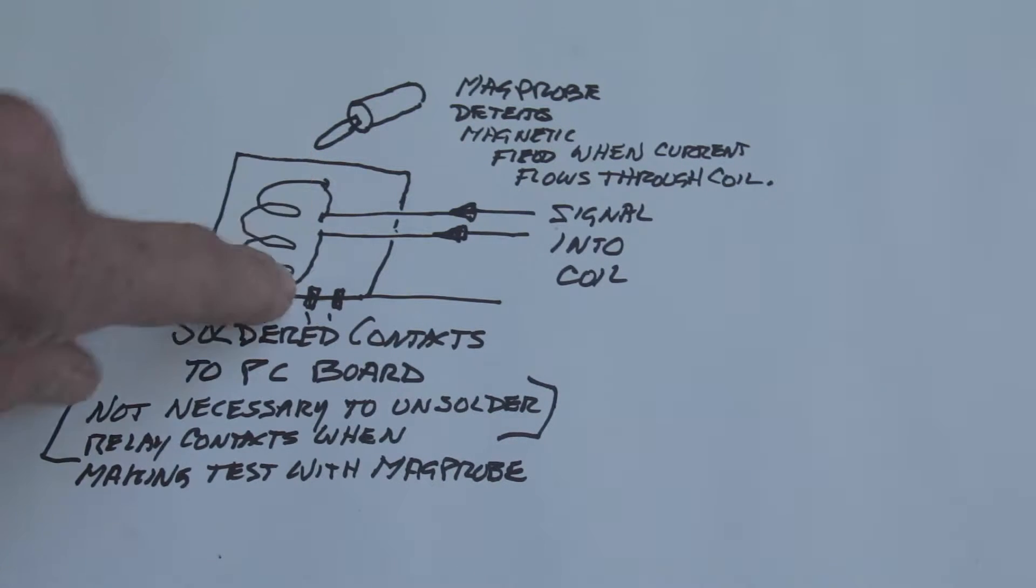This is the power coming into the coil. If you have power to the coil, that's what you're going to want to know on a PLC if you're testing a PLC.